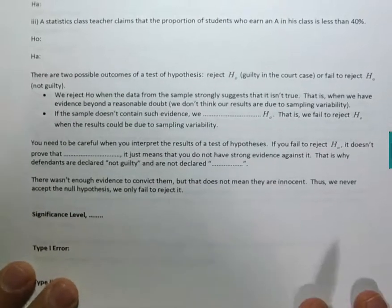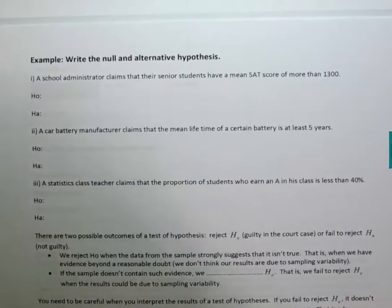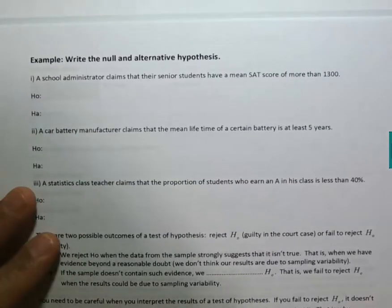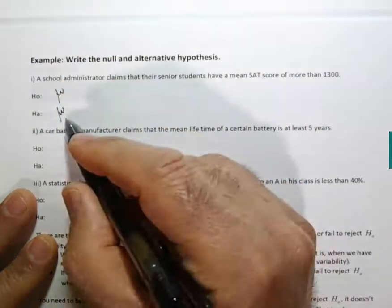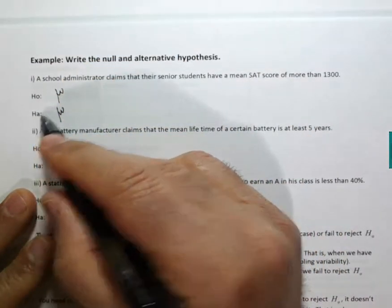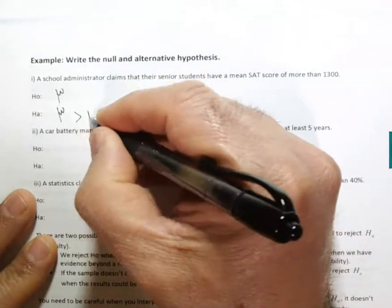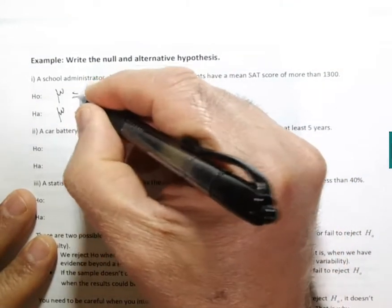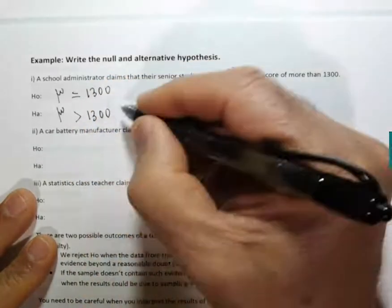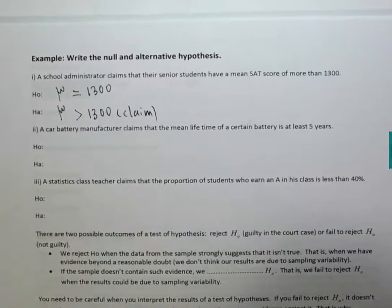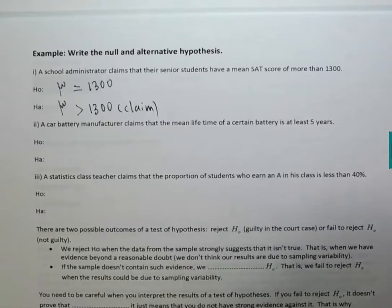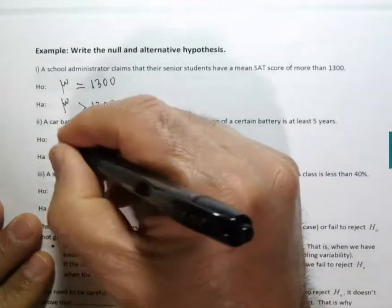Let's look at some examples of hypothesis statements. A school administrator claims that seniors have a mean SAT score of more than 1300. Since 'more than' belongs in the alternative hypothesis, H₁: μ > 1300, and the null is H₀: μ = 1300 — that's where the claim is. Second example: a car battery manufacturer claims the mean life of a battery is at least five years.